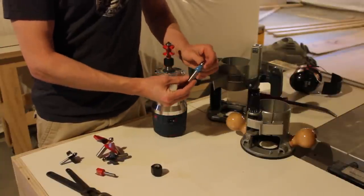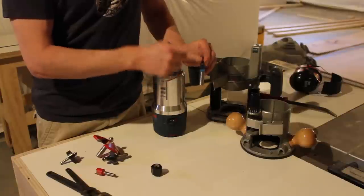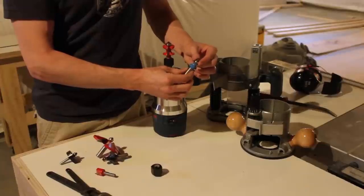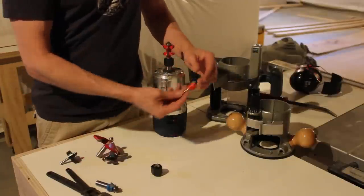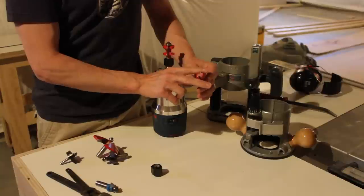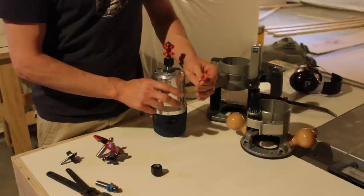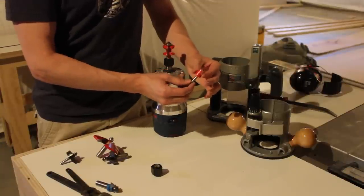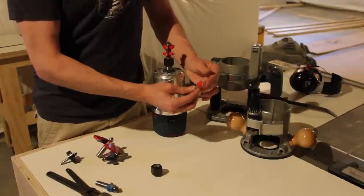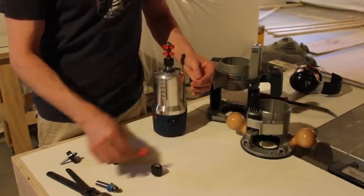This one is a beading bit, and this puts a small little bead on whatever workpiece you're cutting. It also has a little bearing on the end. This is a groove bit, approximately three quarters of an inch. If you want to put grooves or dados in a piece of plywood for cabinet building, you could use this instead of a table saw.